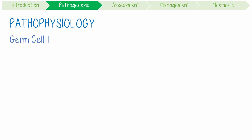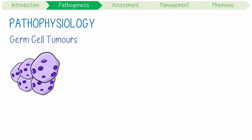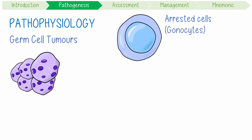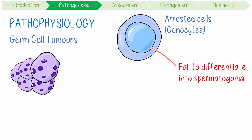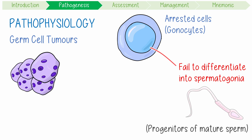Pathophysiologically, GCTs develop from developmentally arrested cells in the fetal testes called gonocytes. After birth, sometimes these gonocytes fail to differentiate further into spermatogonia, which are the progenitor cells that undergo spermatogenesis to eventually form mature sperm.